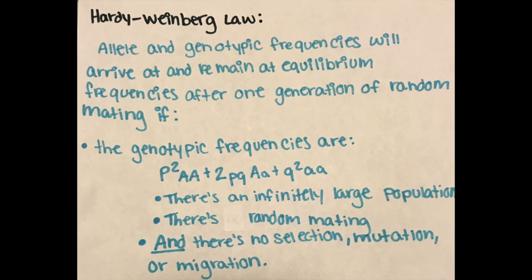The Hardy-Weinberg law states that allele and genotypic frequencies will arrive at and remain at equilibrium frequencies after one generation of random mating if the genotypic frequencies are p squared plus 2pq plus q squared, there's an infinitely large population, there's random mating, and there's no selection, mutation, or migration.